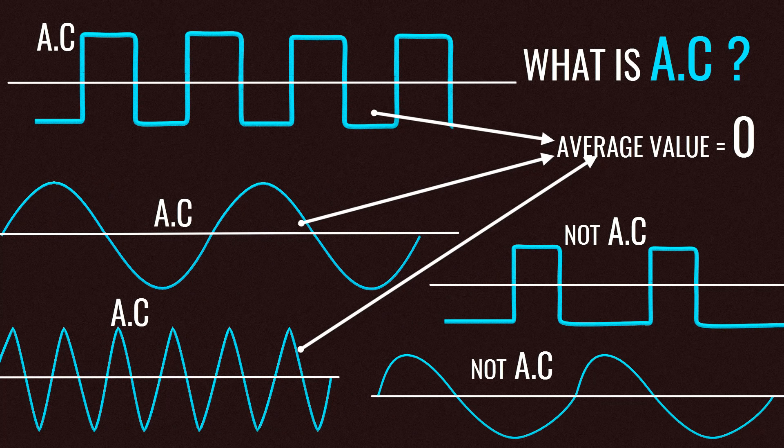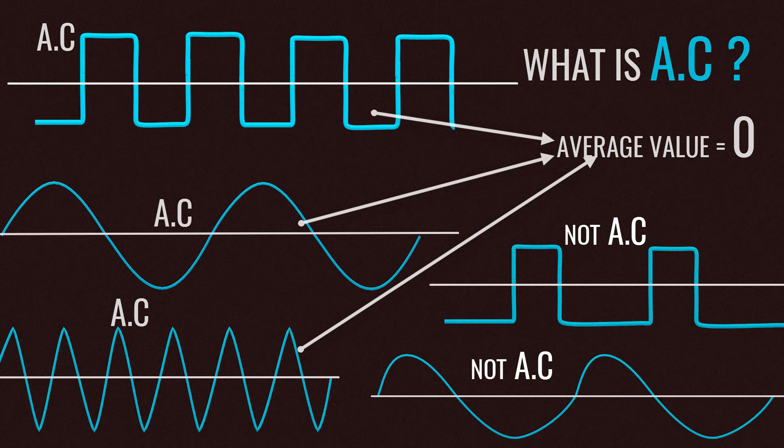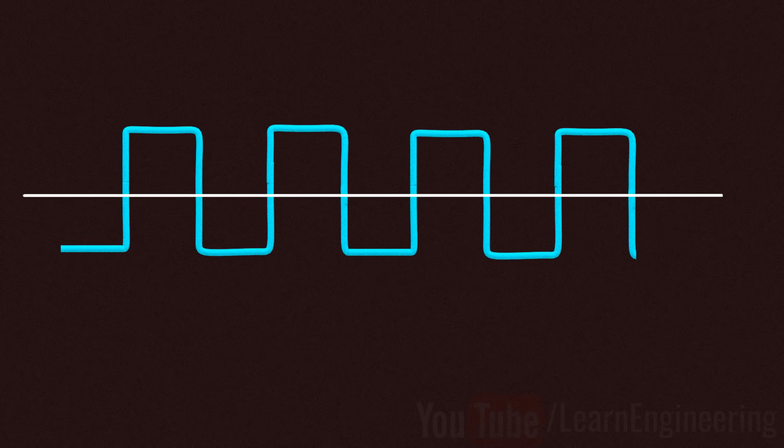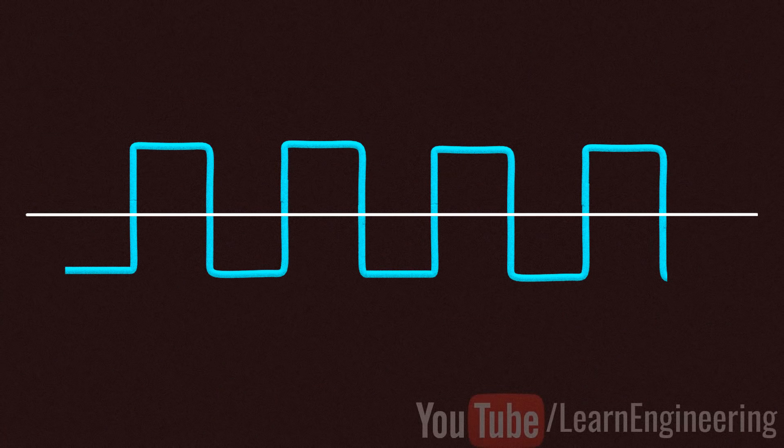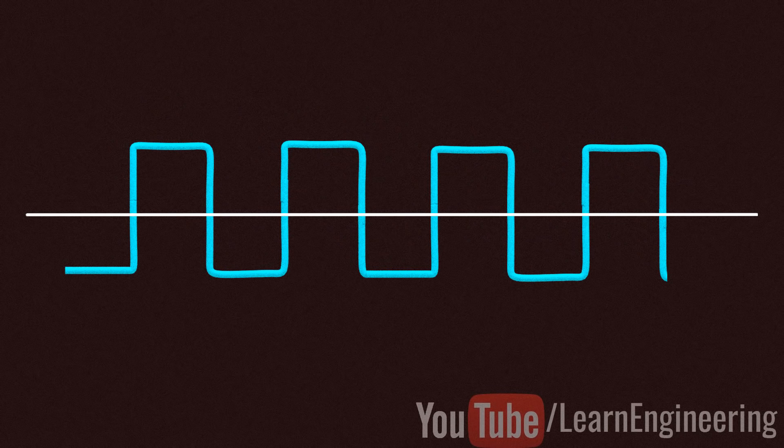Before proceeding to sine wave production, let's see how a square wave alternating current is produced. In fact, the old type inverters used to produce simple square wave as their output.